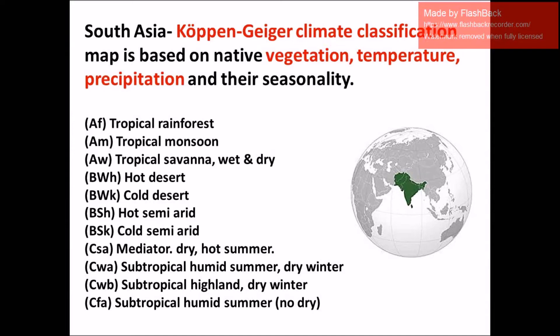In the Köppen classification: Af is used for tropical rainforest, Am for tropical monsoon, Aw for tropical savanna (wet and dry), BWh for hot desert, BWk for cold desert, BSh for hot semi-arid climate, BSk for cold semi-arid, Csa for Mediterranean dry hot summer, Cwa for tropical humid with dry winter, Cwb for dry winter subtropical highlands, and Cfa for tropical humid summer with no dry season.